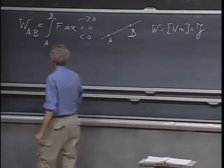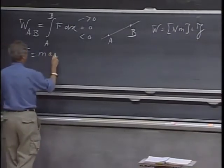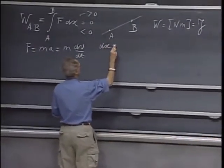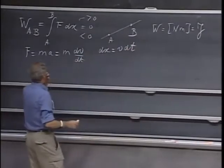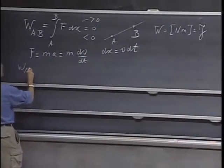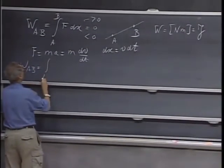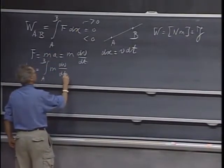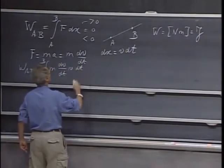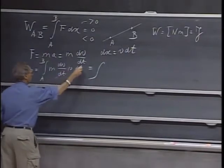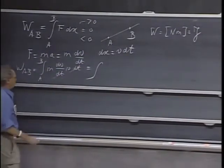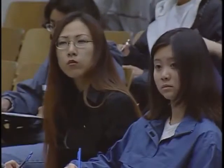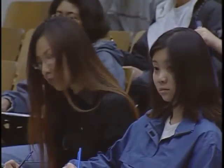F equals ma. So therefore, I can also write for this m dv/dt, and I can write down for dx, I can write down v dt. I substitute that in there, so the work in going from A to B is the integral from A to B times the force, which is m dv/dt, dx, which is v dt. And I can eliminate time, and I can now go to an integral over velocity, the velocity A to the velocity B, and I get m times v times dv.